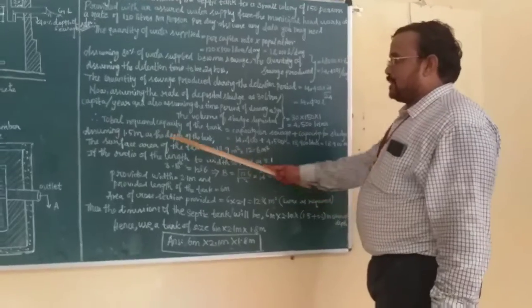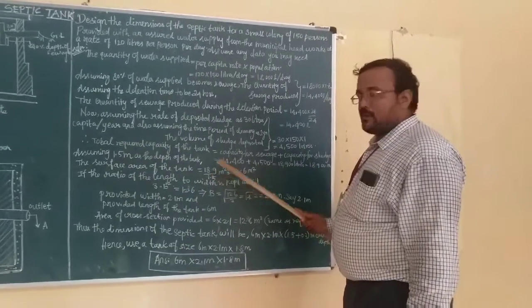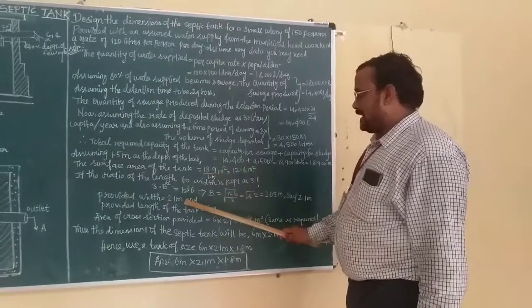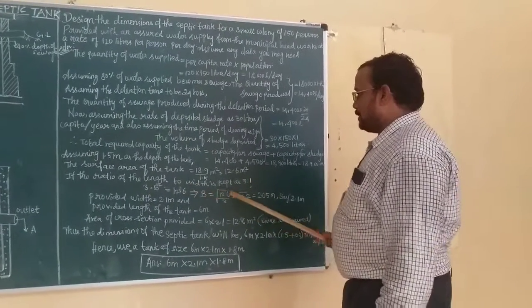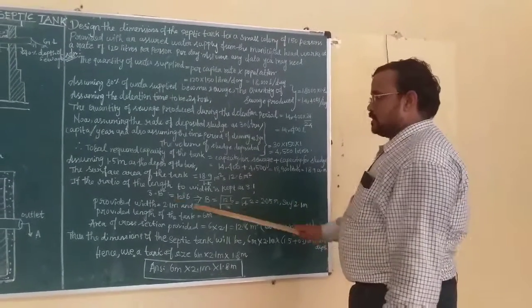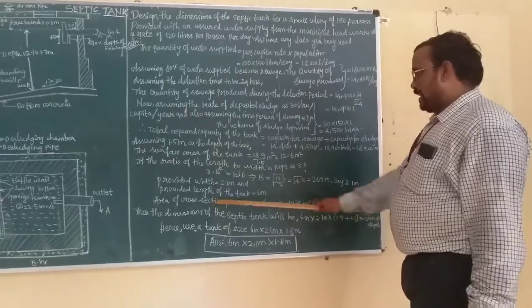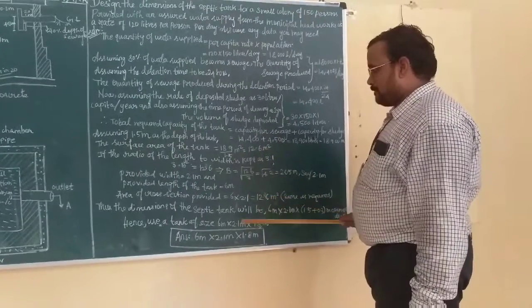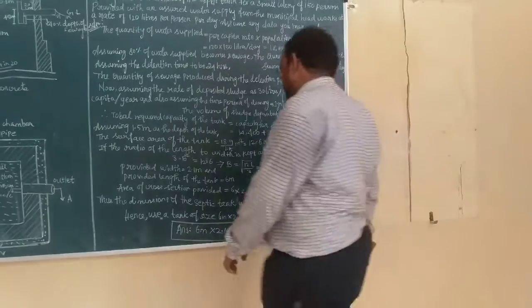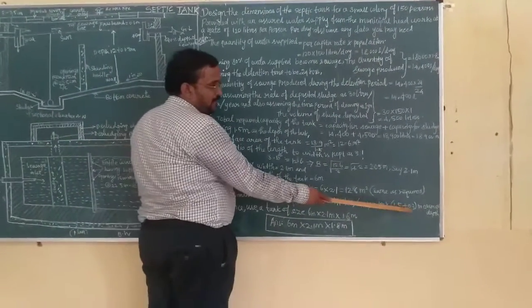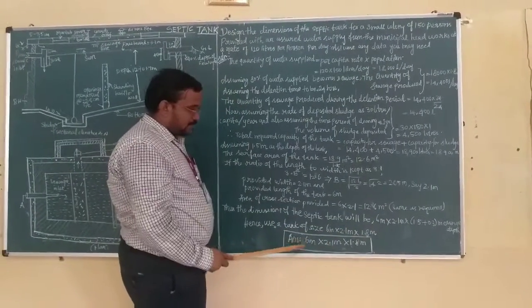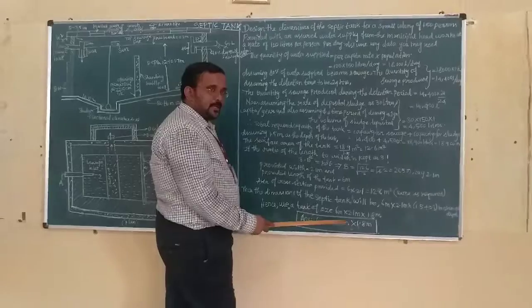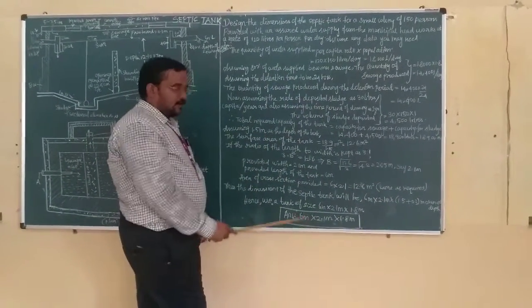Surface area of the tank: we assume a depth of 1.5 meters. The volume is 18.9 divided by depth, giving surface area 12.6 square meters. Ratio of length to breadth we assume as 3 is to 1. We get breadth as 2.05 meters, say 2.1 meters. Length we get as 6 meters. So area of the cross section provided is 12.6 square meters, which is the same as required. So dimension of the septic tank will be 6 meters by 2.1 meters by 1.5 meters.